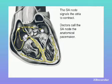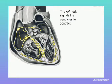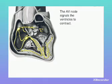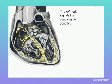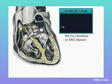Next, the signal travels to the AV node, through the bundle of His, down the bundle branches, and through the Purkinje fibers, causing the ventricles to contract. This signal creates an electrical current.